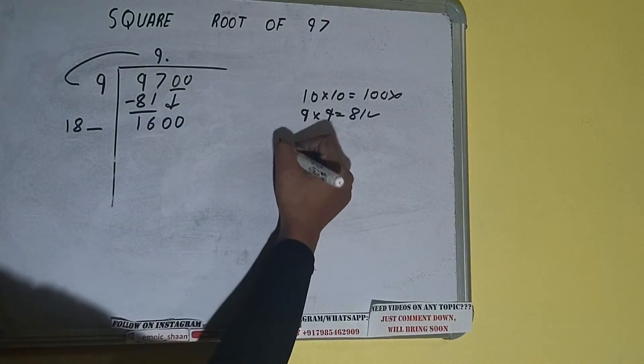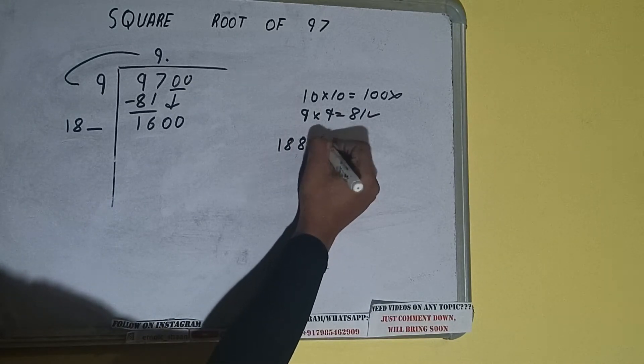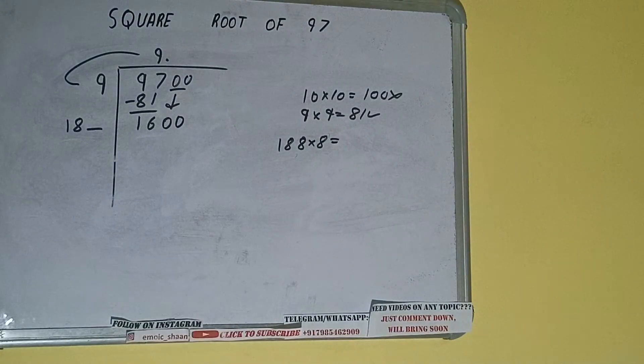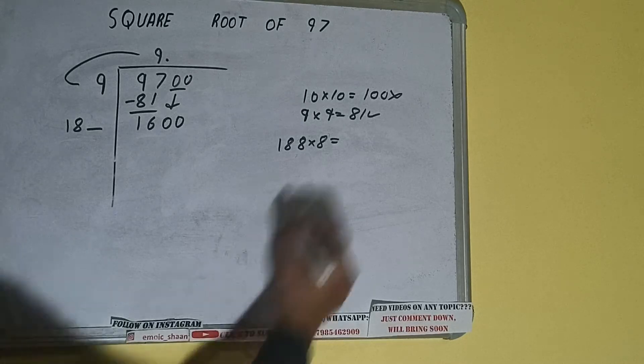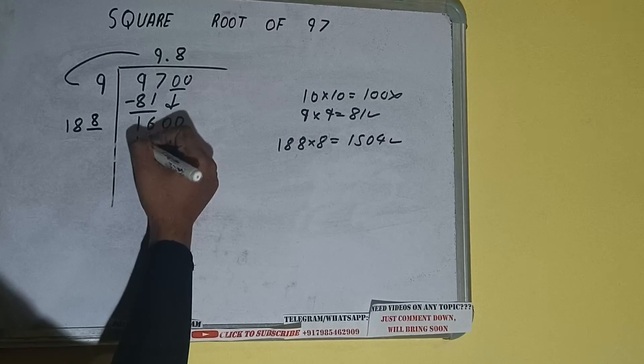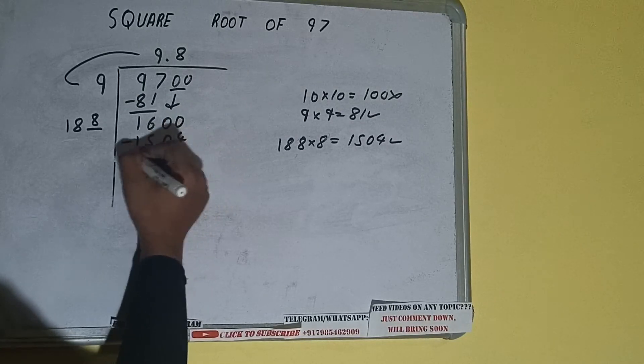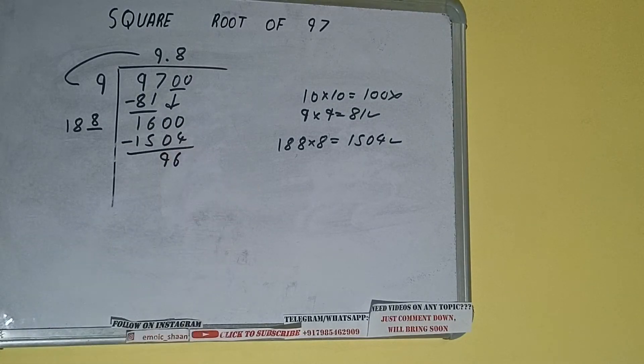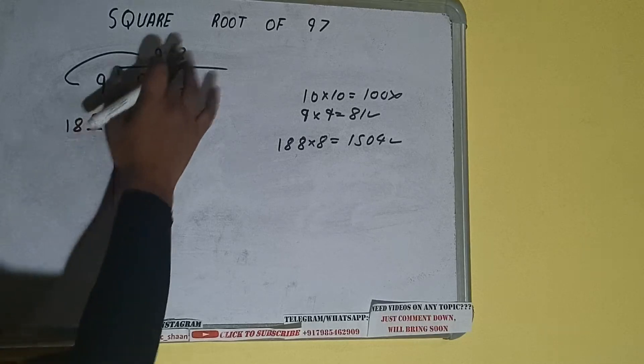We have to try 8 times. 188 into 8 we can try, and we'll be getting 1504, which is good to take. So 8 here and 8 here, 1504 subtract, 96 will be left.